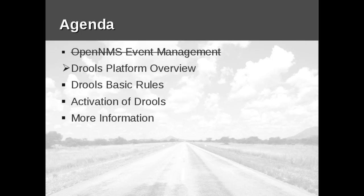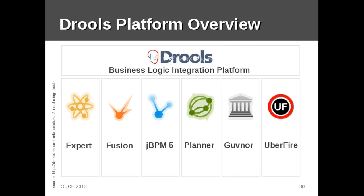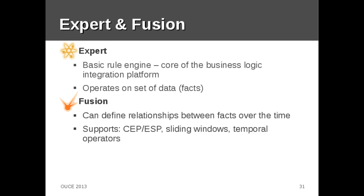That was the first part of my presentation. Now we come to the Drools platform overview. Drools consists of six modules: Expert, Fusion, jBPM (the business process management tool), Planner, Governor, and Uberfire. When we talk about the implementation of Drools in OpenNMS, we are basically talking about Expert.